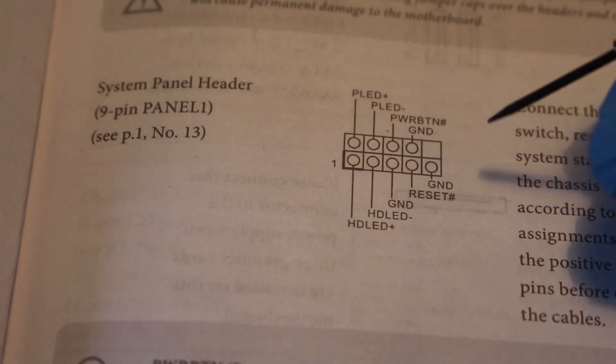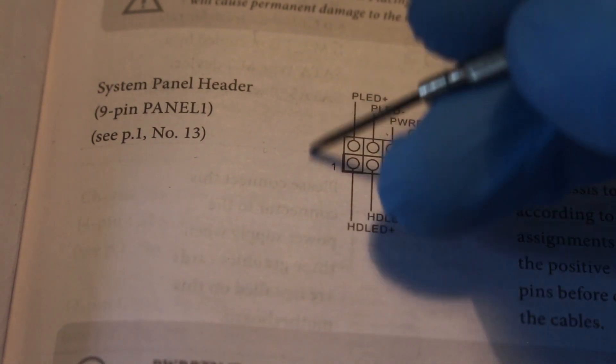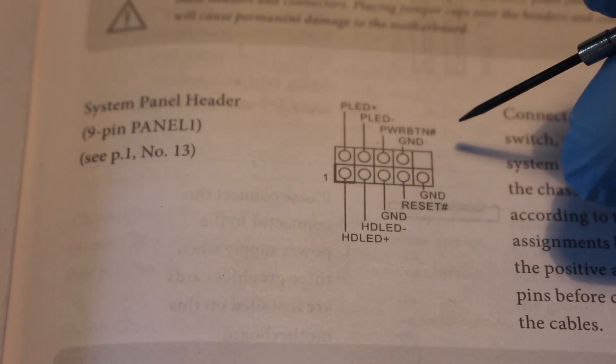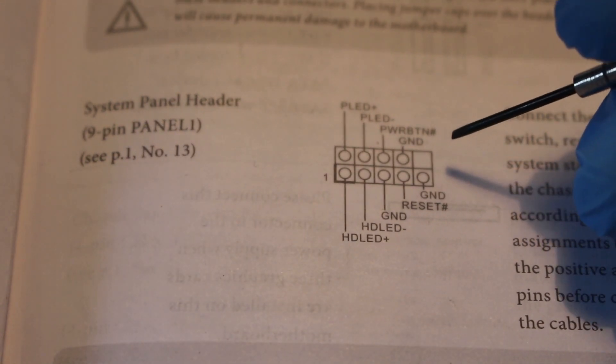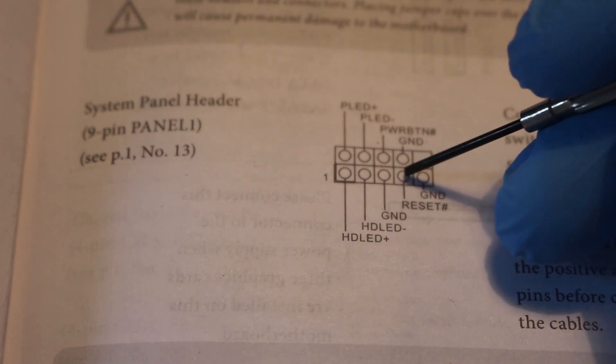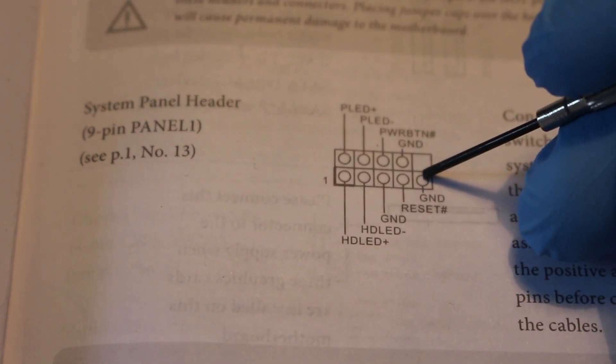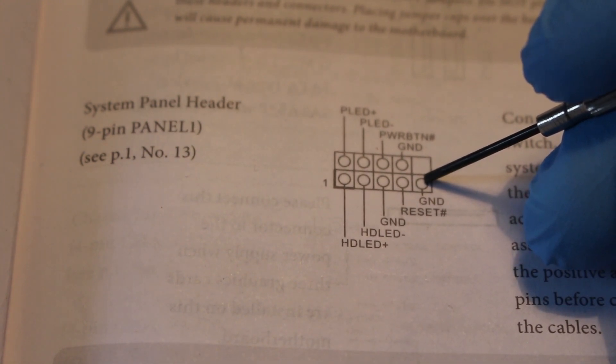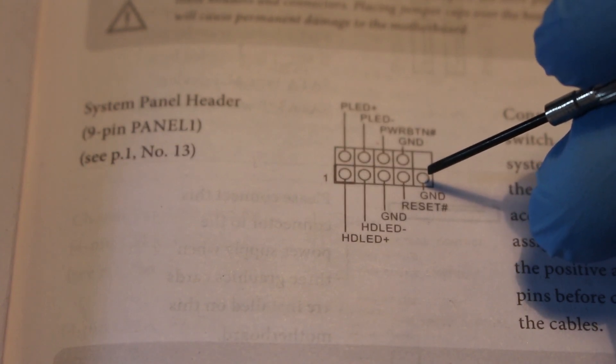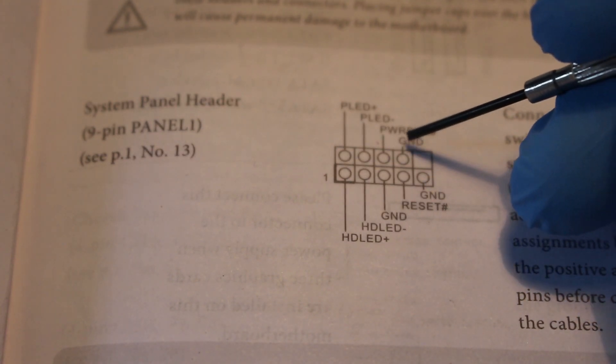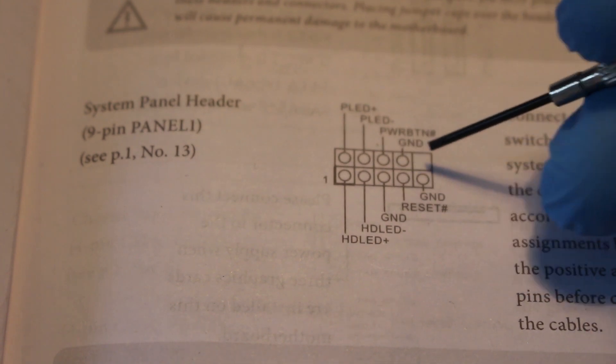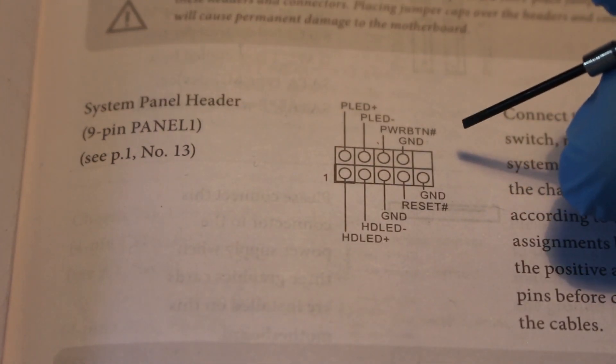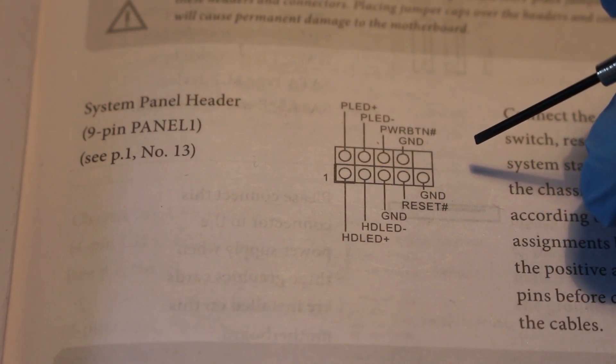So here's a diagram for the system panel header, which is a nine-pin panel located on the motherboard, and this is where your ATX switches get connected. So these two terminals, reset and ground, are the two terminals where the ATX switch would get connected if you would use it for a reset. Above here, these two terminals, labeled as PWRBTN and ground, power button and ground, would be the two terminals used for power.